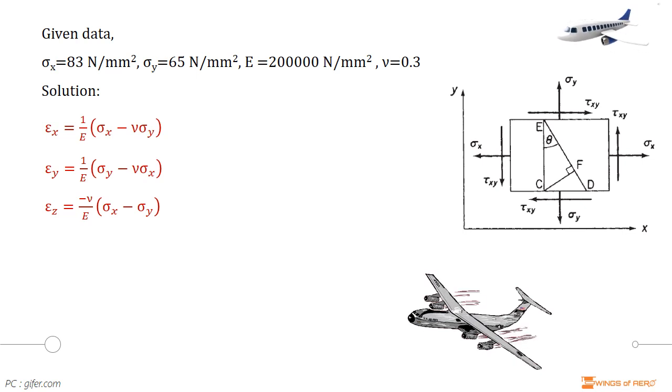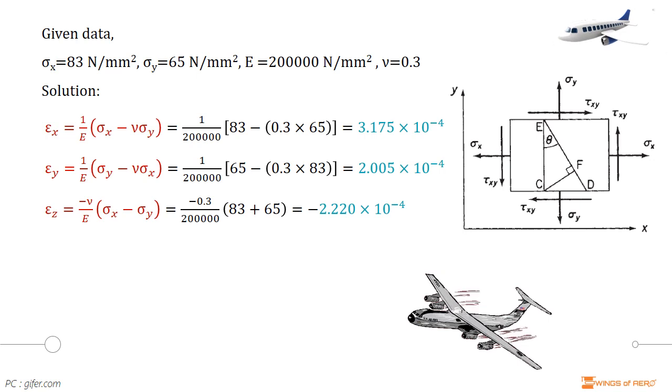Here, all values are given. Substitute those values and simplify. We get strain for x direction, epsilon x is equal to 3.175 into 10 to the power minus 4. And epsilon y is equal to 2.005 into 10 to the power minus 4. And epsilon z is equal to minus 2.220 into 10 to the power minus 4.